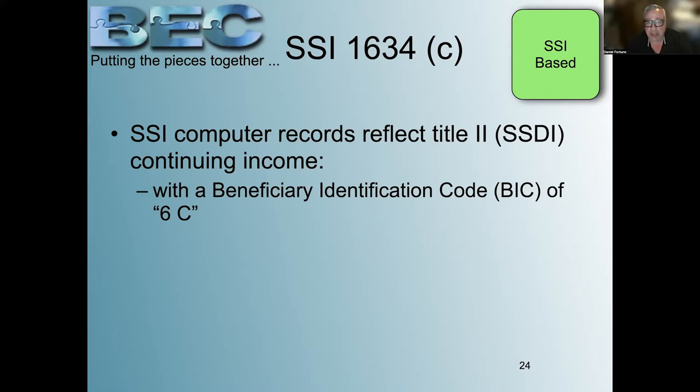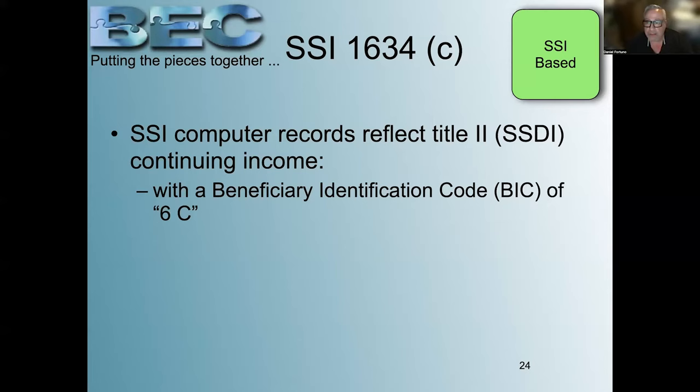The key thing that everything we've talked about brings us to: when you transition from SSI to Disabled Adult Child, to keep the Medi-Cal, you should have a Beneficiary Identification Code of 60, as in Charlie.